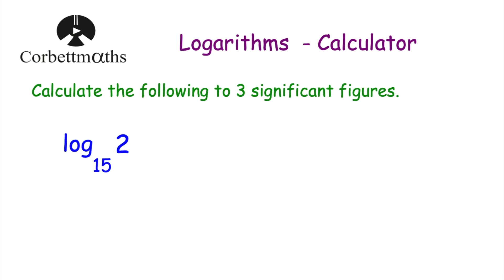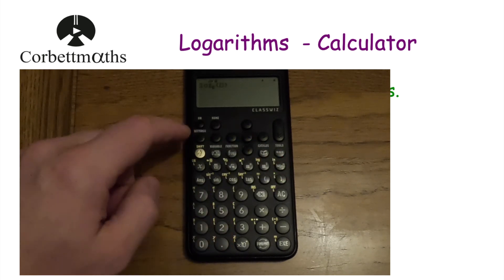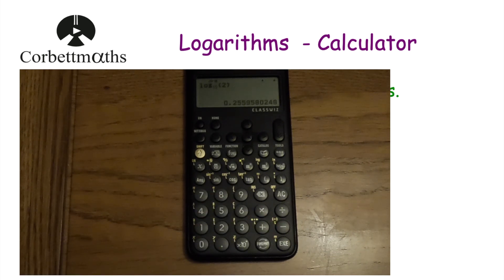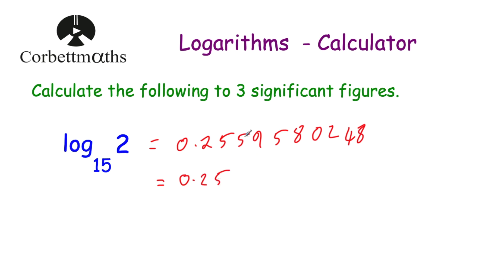This time: calculate the following to three significant figures — log to base 15 of 2. In other words, what power do we raise 15 by to get an answer of 2? Now 15 to the power of 0 is 1 and 15 to the power of 1 is 15, so the answer is going to be 0.something. We press our log button, set the base to 15, go across to 2, and press equals. The answer is 0.2559580248. To three significant figures: 0.25, then we've got 5, 9 — round up to 6 — giving 0.256.